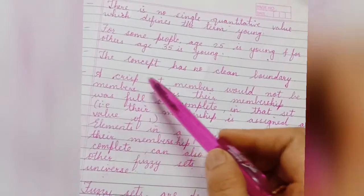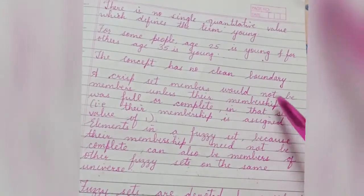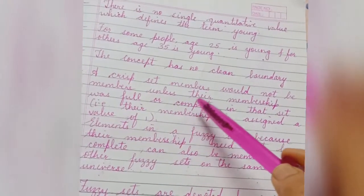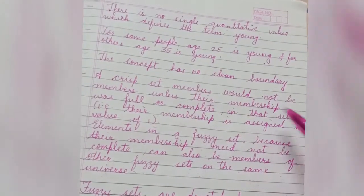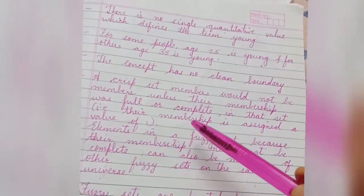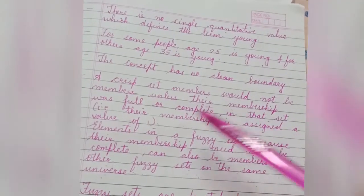A crisp set members will not be members unless their membership is full or complete in that set, that is, their membership is assigned a value of one.